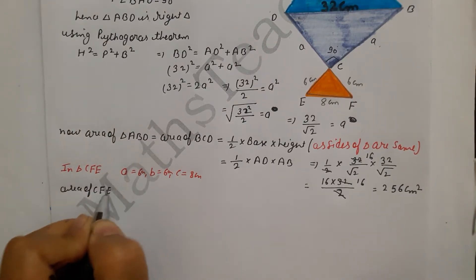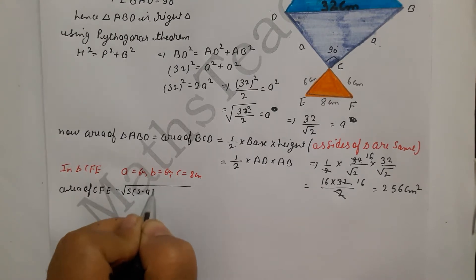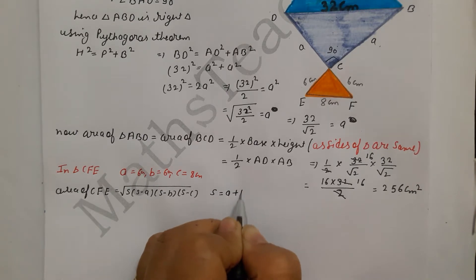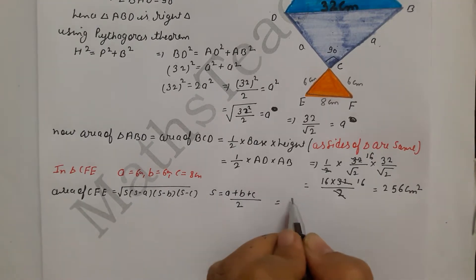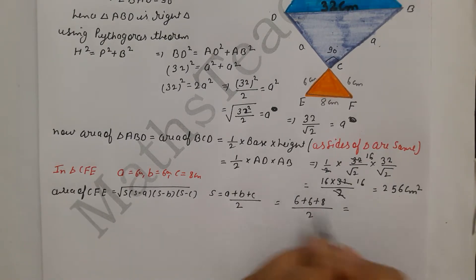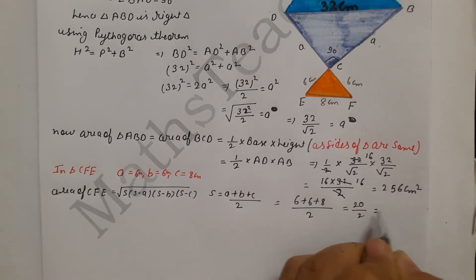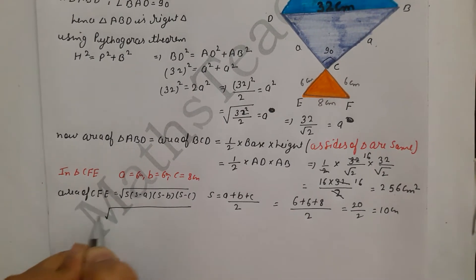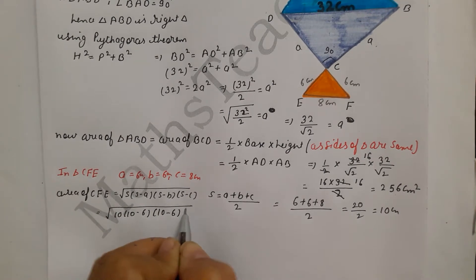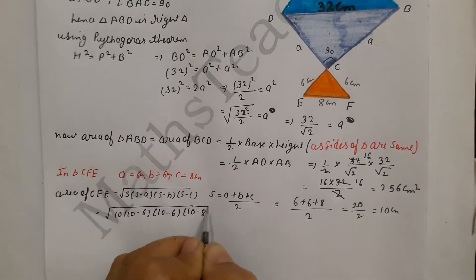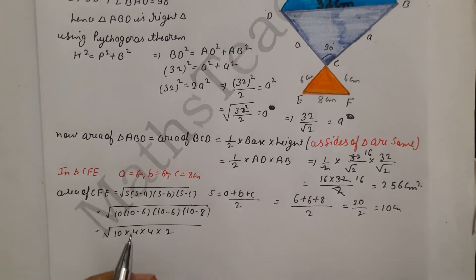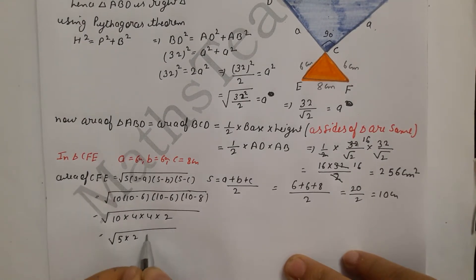We calculate s = (6 + 6 + 8)/2 = 10. Then: s − a = 10 − 6 = 4, s − b = 10 − 6 = 4, s − c = 10 − 8 = 2. So area = √(10 × 4 × 4 × 2).